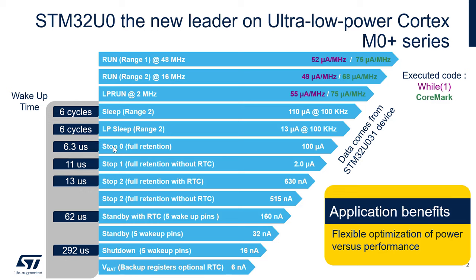Now come the ultra low power modes: Stop 0, Stop 1, and Stop 2. Stop 0 is not the lowest power at around 100 µA, but its advantage is a very fast wake-up of 6.3 µs. Starting with Stop 1, we reach very low power — for example, Stop 1 with full retention and RTC enabled can go down to 2 µA. The wake-up time from Stop 1 is also decent at only 11 µs.